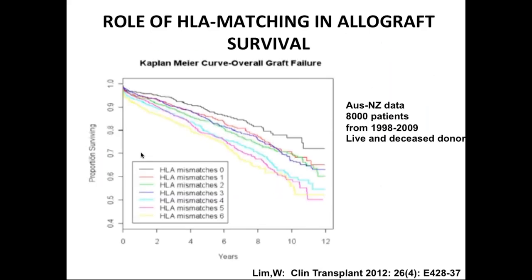Why is mismatching or matching important? From the Australia-New Zealand database — one of 100 similar studies — looking at graft survival: those with zero mismatches have the best survival (top black line), and those with six mismatches have the worst outcomes. One, two, and three mismatches are close together, as are four, five, and six mismatches, with zero doing the best. This is why it's important to know your mismatch level, as it projects out to overall outcomes.